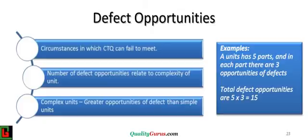Defect opportunities can be thought of as the maximum possible number of defects in a unit if everything is wrong. So if a unit has 5 parts, and in each part there are 3 defects possible, by multiplying these 2 numbers, we can say that there are a maximum of 15 defects possible, or there are 15 defect opportunities.